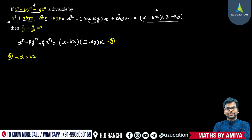Put X equal to bz — that is one of the factors — so if we put X equal to bz, our term becomes bⁿzⁿ minus pYⁿ plus qZⁿ is equal to 0, because this expression becomes 0. Say this one is Expression B.